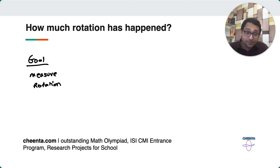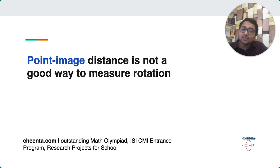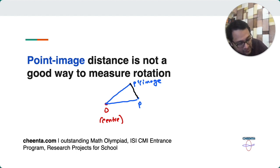So, how do we do that? Well, notice that point image distance is not a good way to measure rotation. Why not? Well, let's see. If you suppose O is the center, which is the fixed point of this particular motion, and P is a point here, and its image is P prime under a certain amount of rotation. So, let me join OP, and let me join OP prime. This is the image. Then the distance from point to image, this one, PP prime. Suppose you tell me that the length of PP prime is the amount of rotation that has happened.